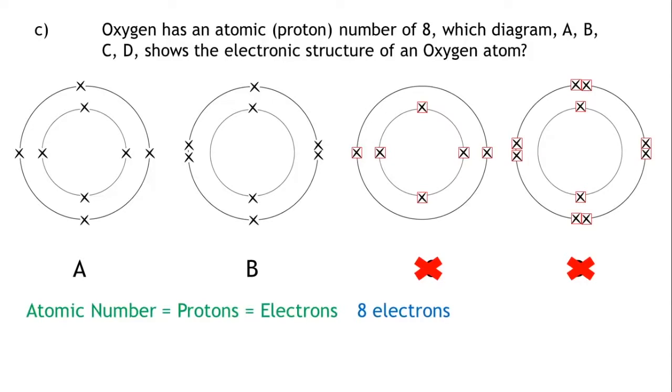What else do we know? We know that the first shell of an atom can only hold a maximum of two electrons. This means we can eliminate diagram A, because it has four electrons in its first shell.